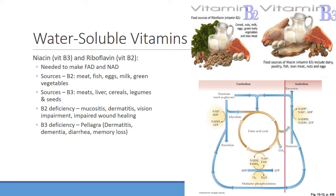Next we have niacin (B3) and riboflavin (B2). These are utilized in the production of FAD and NAD, which are important electron acceptors that get shuttled to the electron transport chain to generate ATP. You can find B2 in fish, eggs, milk, and certain green vegetables. With a well-balanced diet you'll get plenty, but vegetarians who don't eat meat, fish, or eggs could have deficiencies if not supplementing. It's important to ask patients about dietary gaps.